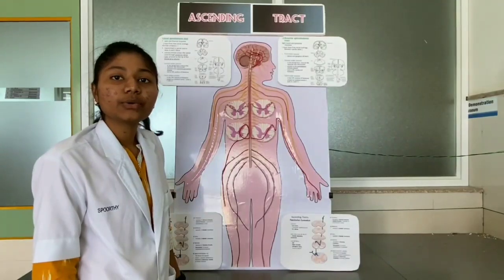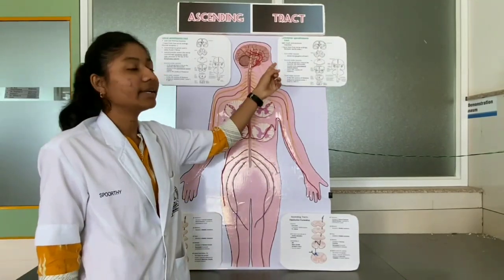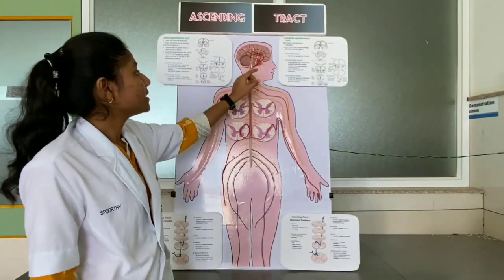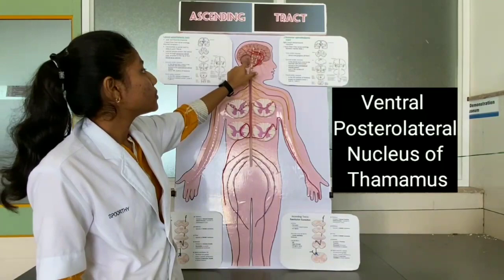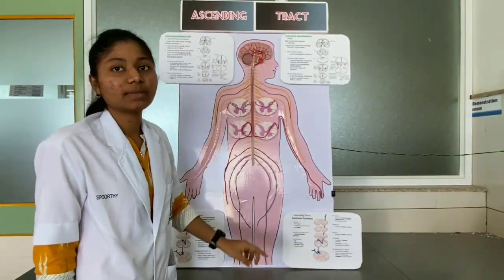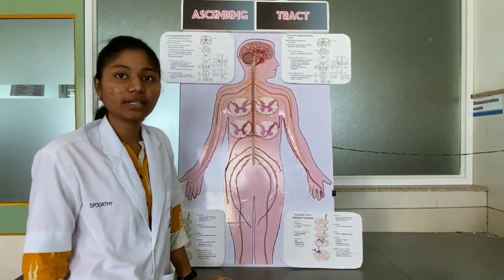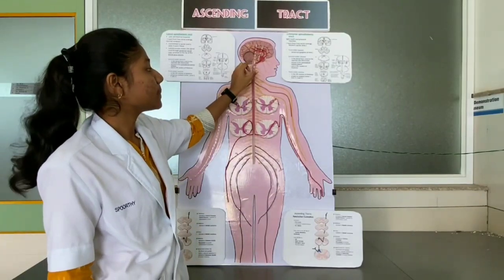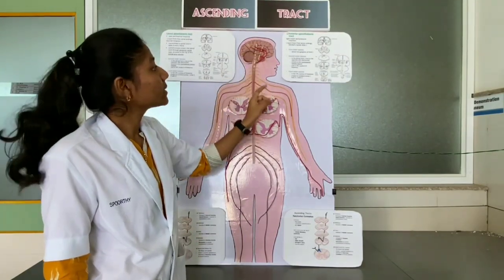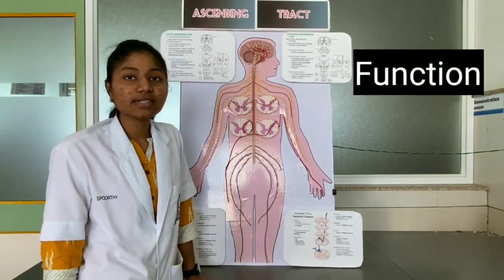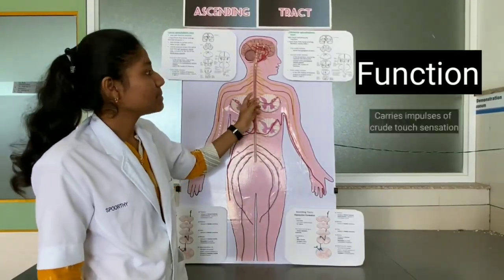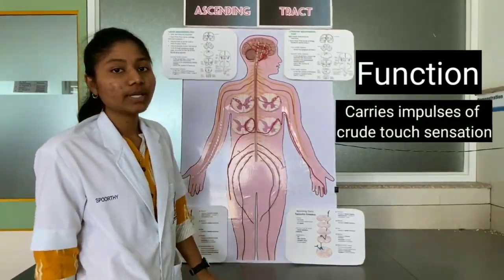Now we are going to see the termination of the anterior spinothalamic tract. It terminates in the ventral posterior lateral nucleus of the thalamus. The neurons of this thalamus form third order neurons, and the impulses pass across the subcortical area to the cerebral cortex. The function of the anterior spinothalamic tract is to carry impulses of crude touch sensation.